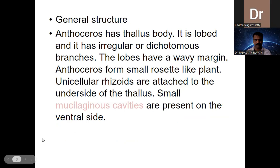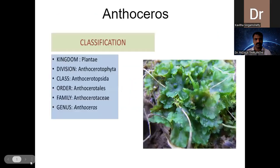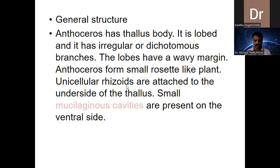When we talk about the general vegetative structure of Anthoceros, it is also a thaloid plant body, just like Marcantia — a lobed thallus, irregular or dichotomously branched. The margin of the thallus is wavy. By the appearance of this wavy margin we can identify it as Anthoceros.